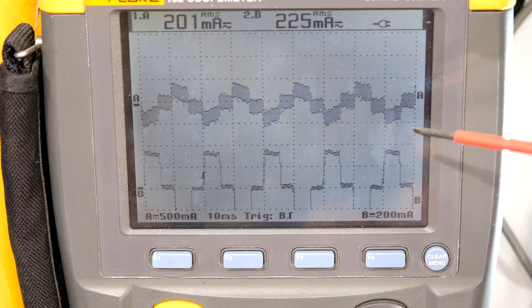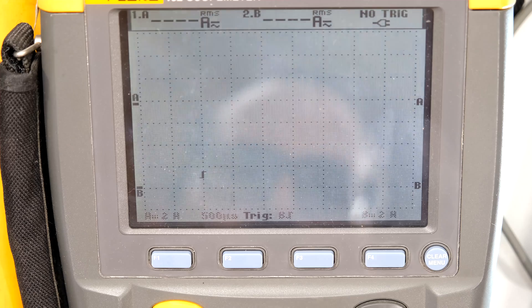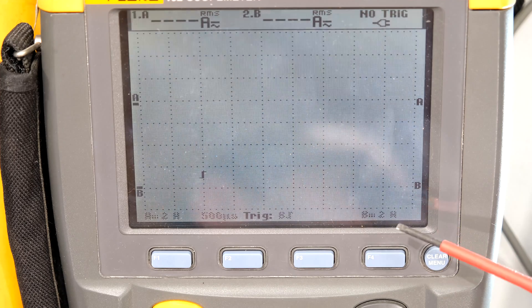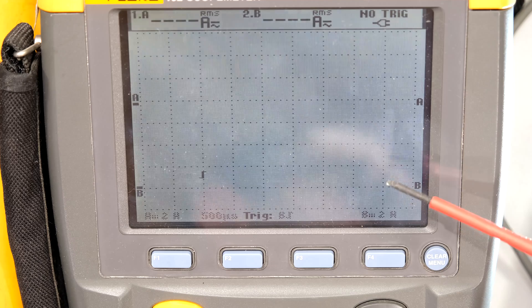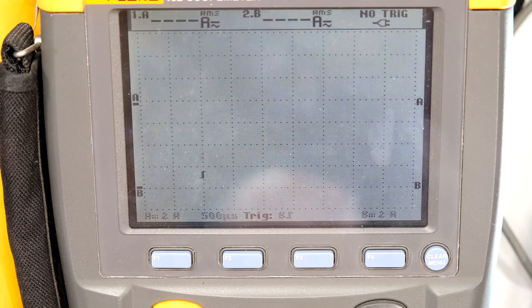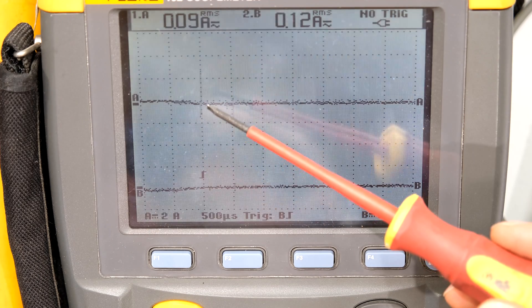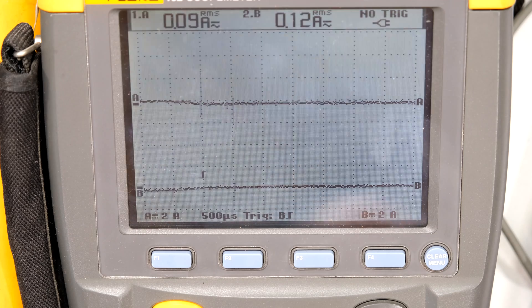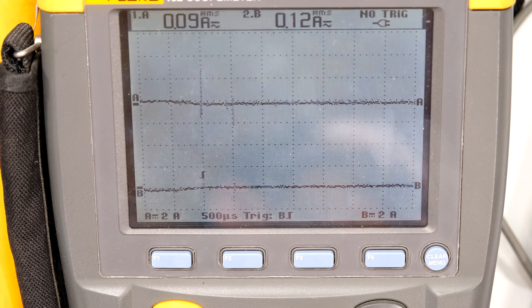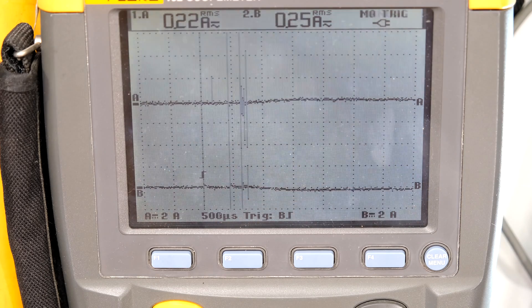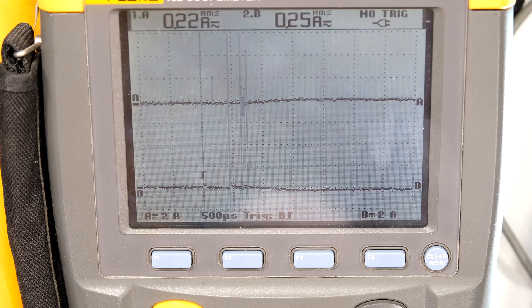What I'm going to do is change the time base to one millisecond because that's more realistic for that type of measurement. I'm also setting the current per division to two amps for each side. So each one of these divisions is now two amps. Now I'm going to switch off the light. There's an immediate surge there on the turn off but I'll talk about that more just now.